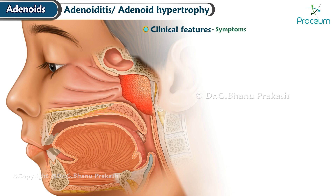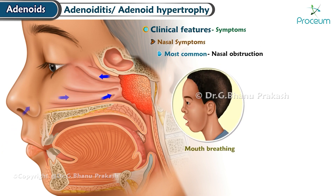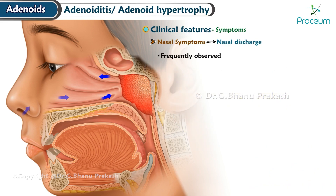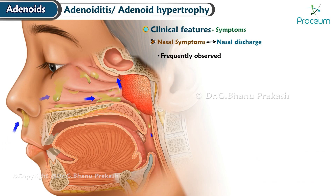Clinical features — nasal symptoms: The most common symptom is nasal obstruction leading to mouth breathing. This obstruction can also interfere with the child's ability to feed or suckle, as breathing and feeding cannot occur simultaneously. Consequently, children with enlarged adenoids may experience failure to thrive. Nasal discharge is frequently observed, attributable to choanal obstruction and associated chronic rhinitis, often resulting in a wet, bubbly nose.